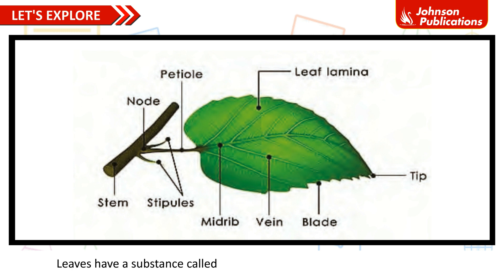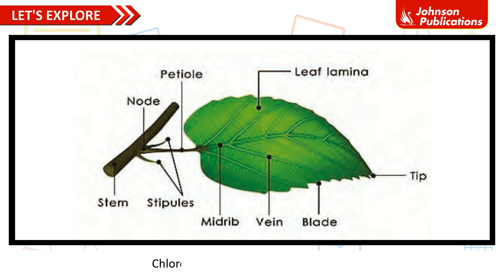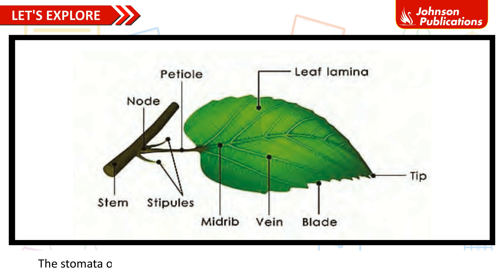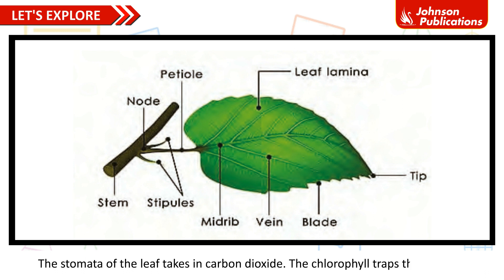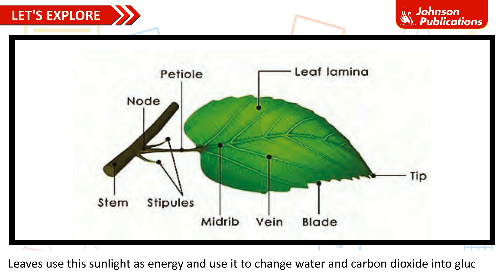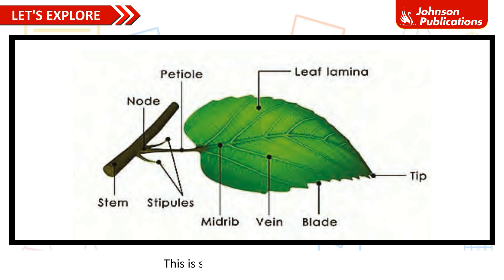Leaves have a substance called chlorophyll that gives them the green color. Chlorophyll helps leaves to make food. Roots supply water and minerals to the leaves through the stem. The stomata of the leaf takes in carbon dioxide. The chlorophyll traps the sunlight. Leaves use the sunlight as energy and use it to change water and carbon dioxide into glucose. This is supplied to the entire plant.